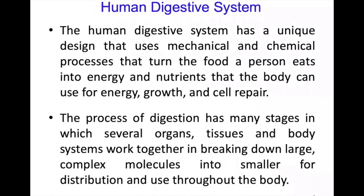The human digestive system is a unique design that uses mechanical and chemical processes to turn the food a person eats into energy and nutrients that the body can use for energy, growth and cell repair.